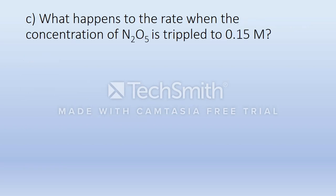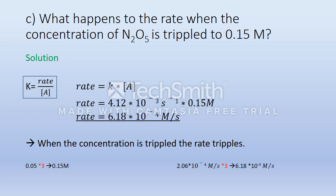Part C. What happens to the rate when the concentration of N₂O₅ is tripled to 0.15 mol? We need the same formula as in the task before. And when we calculate this, we come to the result that when the concentration is tripled, the rate triples.